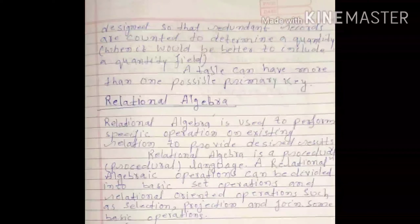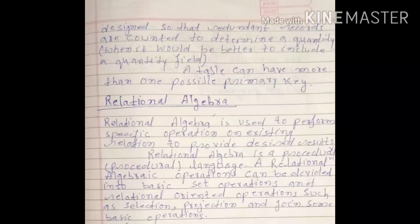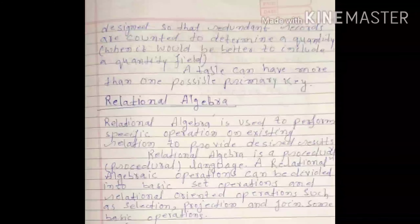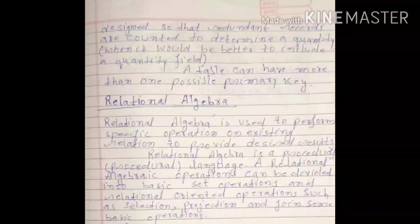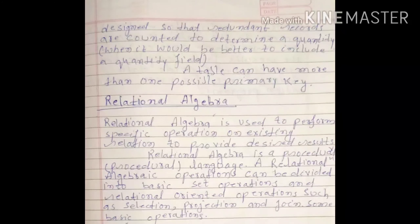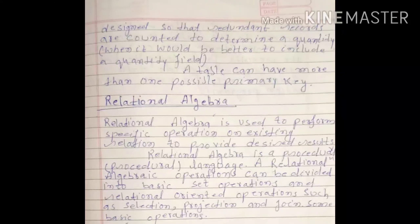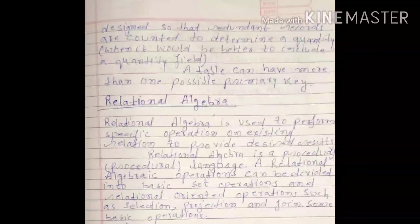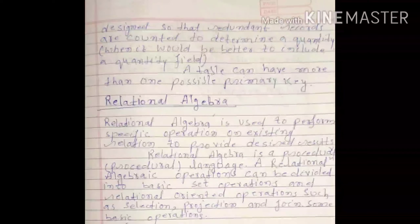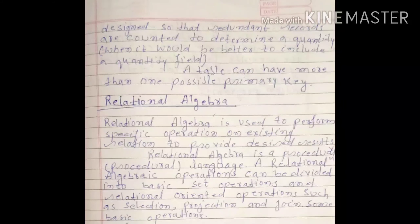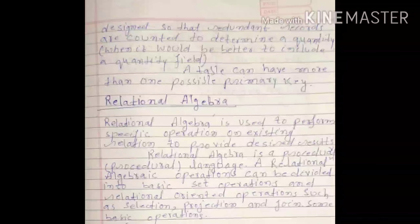अब इसको समझते हैं — relational algebra। Relational algebra use होता है specific operations को perform करने के लिए existing relation में, desired result provide करने के लिए। Relational algebra एक procedural language है। Relational algebra operations दो में divided हो सकते हैं: basic set operations और relational oriented operations जैसे कि projection, selection, और join।